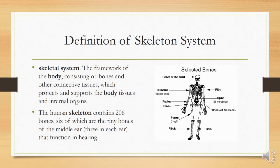As far as the definition of skeleton system is concerned, we can say that it is a framework of the body. It is a structure of the body which depends upon the skeleton system. So it consists of bones and other connective tissues which protect and support the body tissues and internal organs.